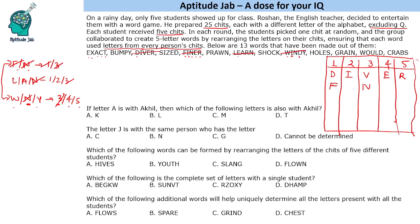Next, let's use the word GRAIN, of which R, I, N are already placed. That means G and A have to be in positions 1 or 4, and L and A are in 1 or 2. Taking the common element, A is in position 1 and L is in position 2. Since A is in 1, G is in 4.